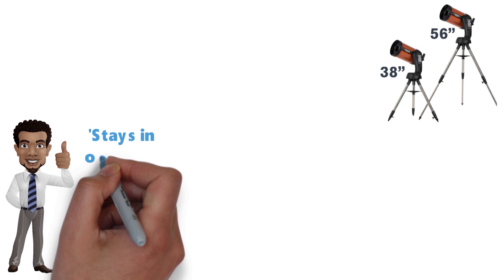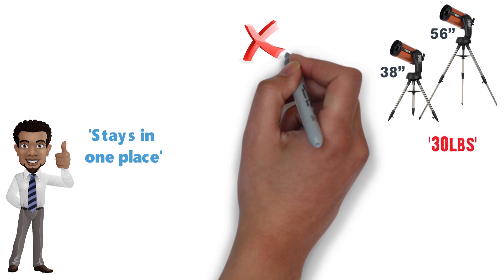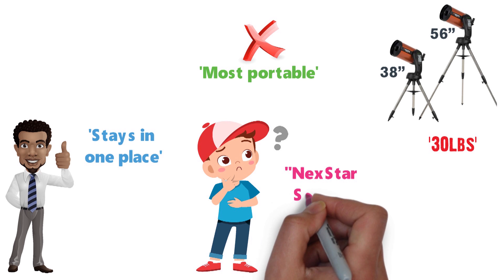If you don't mind having a telescope that stays in one place, it's 30 pounds so it's not the most portable, then you could consider a telescope from the Nextstar series.